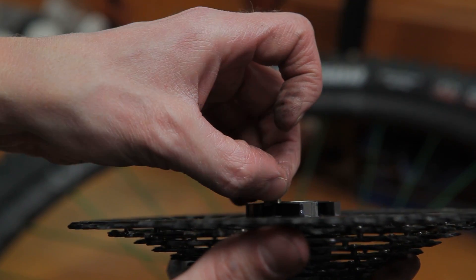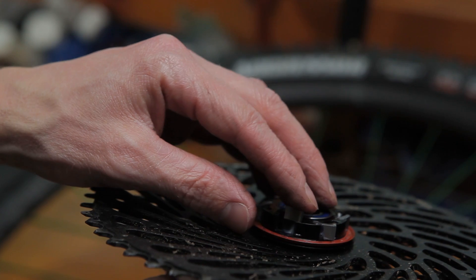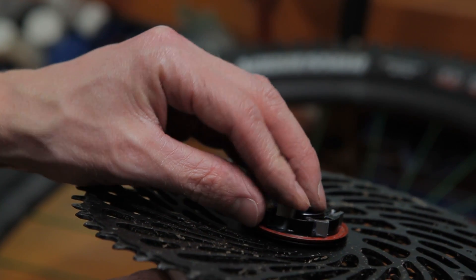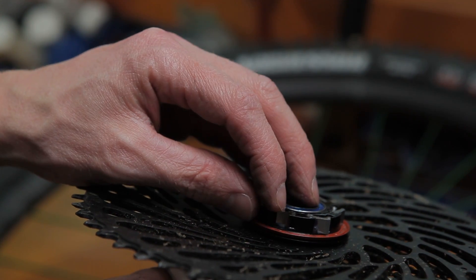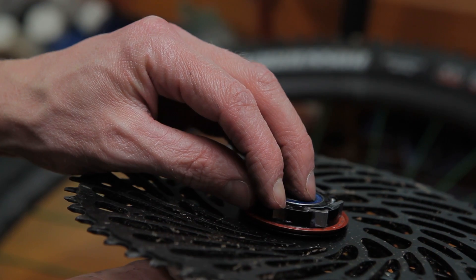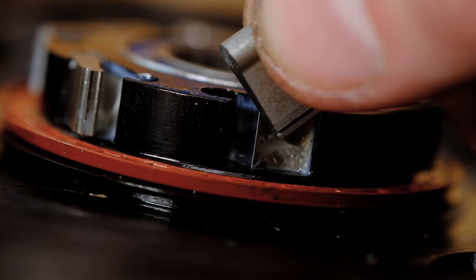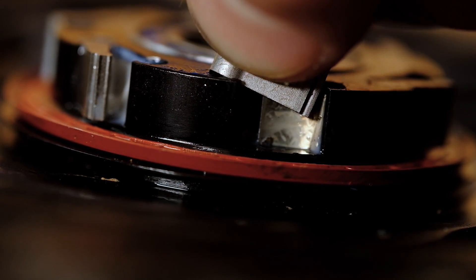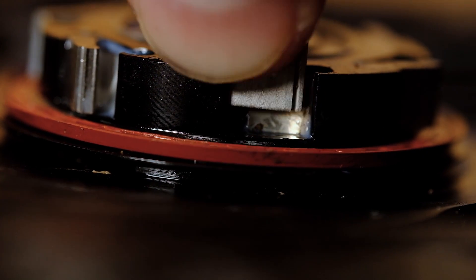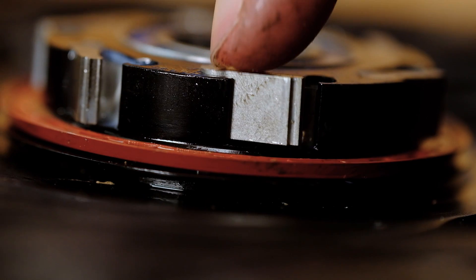Use the same method to return the spring to its seat. To reinstall the pawl, first make sure the spring is fully seated. Be sure you orient the pawl with the step facing out. Use the edge of the pawl to depress the spring and then rotate it into position.